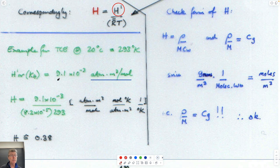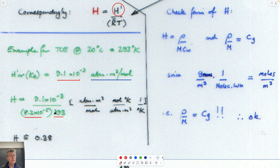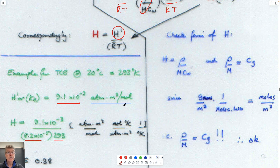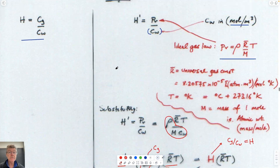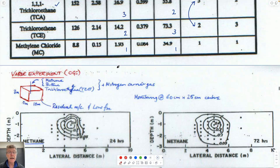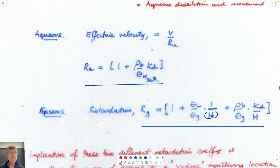Once we know H for a compound, we can always calculate the retardation coefficients for both the gas phase and the aqueous phase. The units drop out as expected, so we know exactly how to get these retardation coefficients.